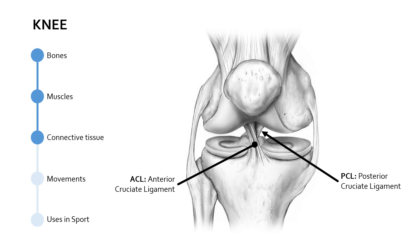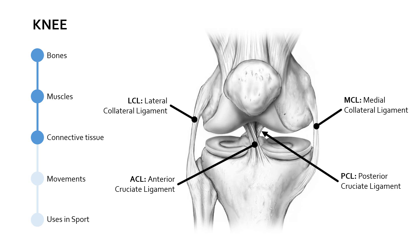On either side of the knee joint we have collateral ligaments — collateral meaning alongside. The collateral ligament on the outside of the knee is the lateral collateral ligament, and on the inside is the medial collateral ligament. We also refer to these as the LCL and MCL. The purpose of these collateral ligaments is to prevent excessive medial or lateral movement of the knee that might ultimately cause damage.